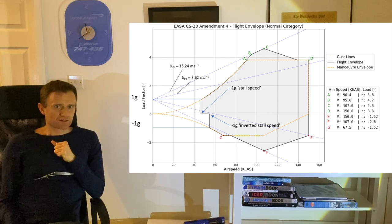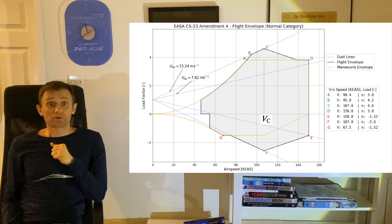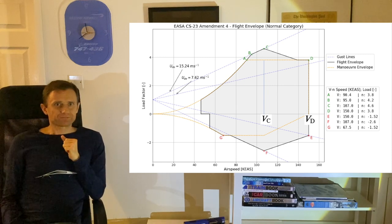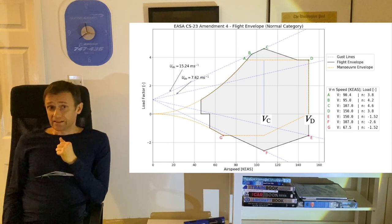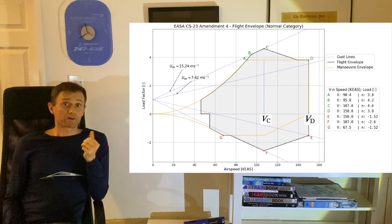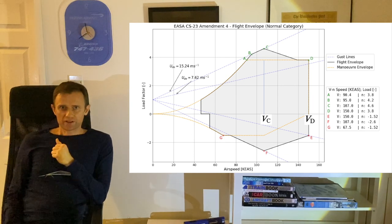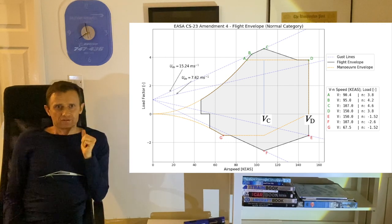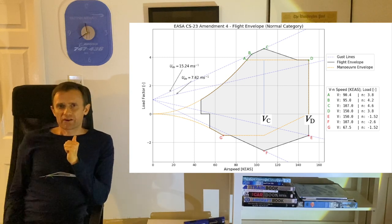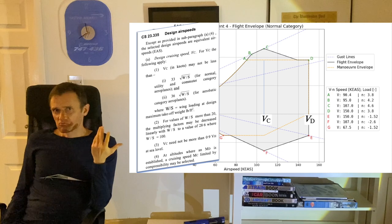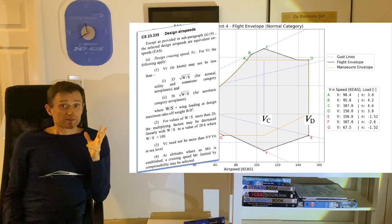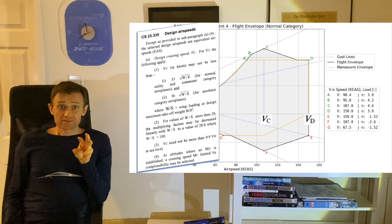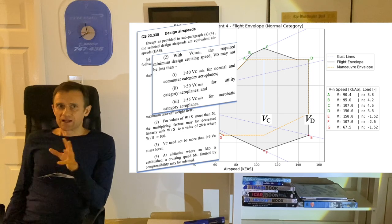Other significant speeds that determine the shape of both envelopes are the design cruise speed VC and the design dive speed VD. While VC is of course related to the operationally most favorable speed of the aircraft, for example the speed that maximizes its range, this certification value of the cruise speed must be chosen quite carefully because airworthiness requirements such as CS 23.335 establish a series of quite complicated constraints and relationships between VC, VD, wing loading, and much else.